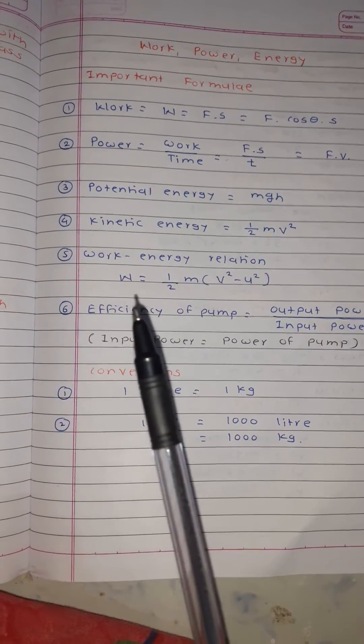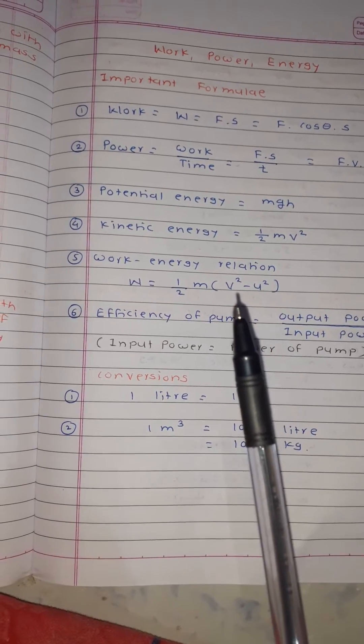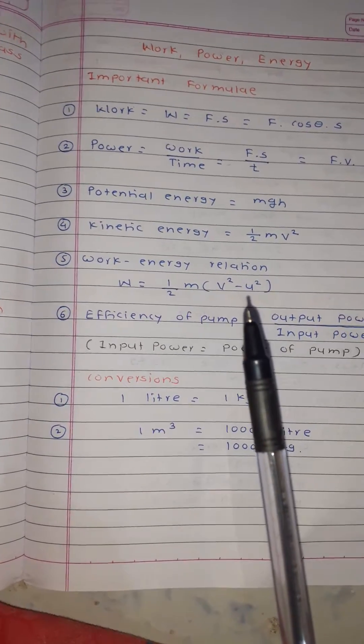The work-energy relation is given by W = 1/2 m(v² - u²) where v is final velocity, u is initial velocity.